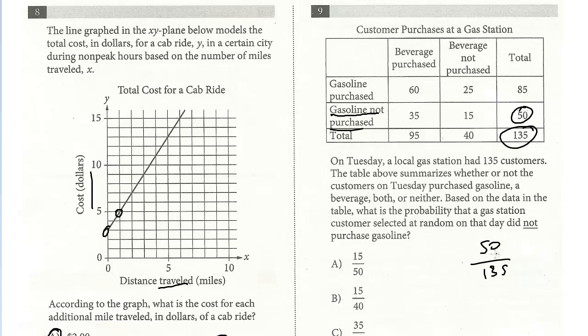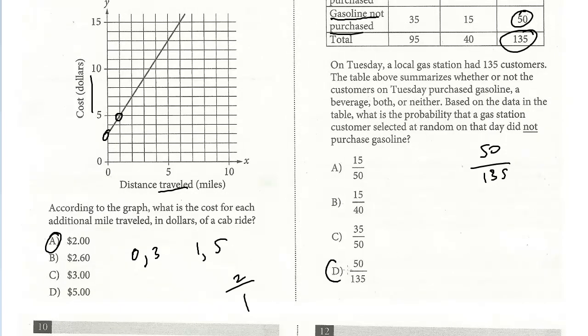Sorry, I circled it and I said 150, but it's 50. And so that's it, it's just 50 over 135. So the answer is D.